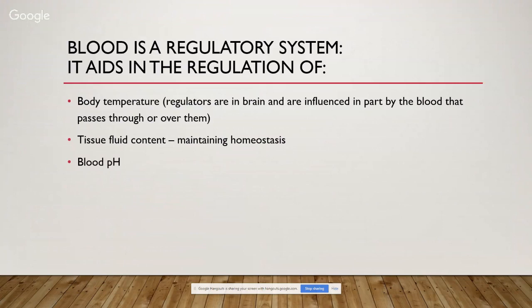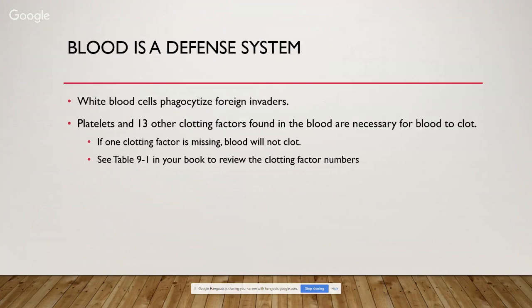Blood is a regulatory system. It aids in the regulation of body temperature — the regulators are in the brain and are influenced in part by the blood that passes through them. It also regulates tissue fluid content, which helps to maintain homeostasis, and blood pH. White blood cells are part of the defense system. They phagocytize or eat up foreign invaders. Platelets and 13 other clotting factors are found in blood and necessary for the blood to clot; if any one of those clotting factors is missing, blood will not clot. Look at table 9-1 in your book to review those clotting factor numbers. One important one is von Willebrand's factor — that's factor 8 — and that is a common disorder we see in dogs.